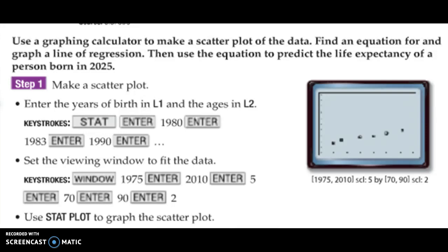Now, before we graph it, we have to make sure that our window is set correctly, like it is over on the right. So, I click on the window button. It's right next to Y equals. And our X minimum is going to be 1975. Our X maximum is going to be 2010. And my X scale is going to be 5. Our Y minimum is going to be 70. Y maximum is going to be 90. Go up by 2s. And the X resolution is 1. Feel free to stop and replay this part of the video if you're confused. Or if you need a break for a second.